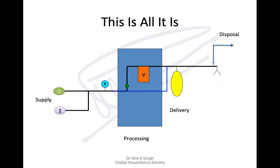The oxygen can also come from cylinders at the back of the machine. Once the oxygen supply comes in, it is processed by the machine, then delivered to the patient via a breathing system. Waste gases are disposed of using scavenging. So there is supply, processing, delivery, and disposal — this is known as the SPDD model.